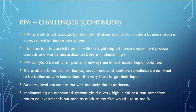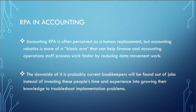RPA is often perceived as a human replacement, but accounting robotics is more than a bionic arm that processes work faster — it reduces data movement. The downside is that current bookkeepers may find themselves without jobs. Instead of investing in people's time and experience to troubleshoot implementation, companies sometimes just lay them off. We need to find ways to bring these people on board, integrating the experience of managers, IT people, and company veterans rather than simply laying them off — that would be the recommendation.